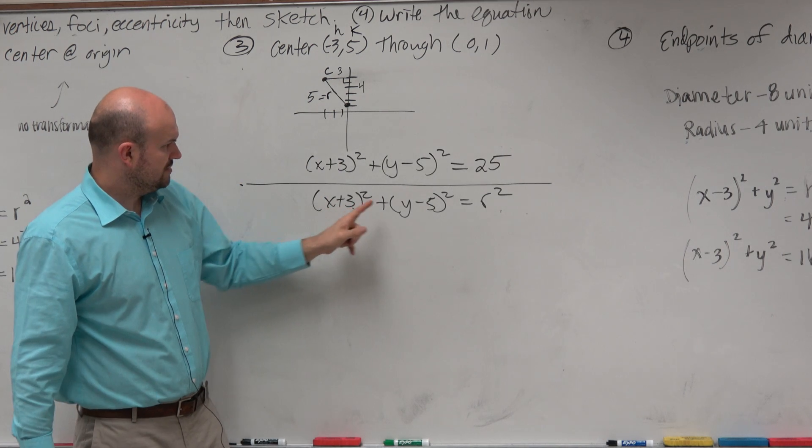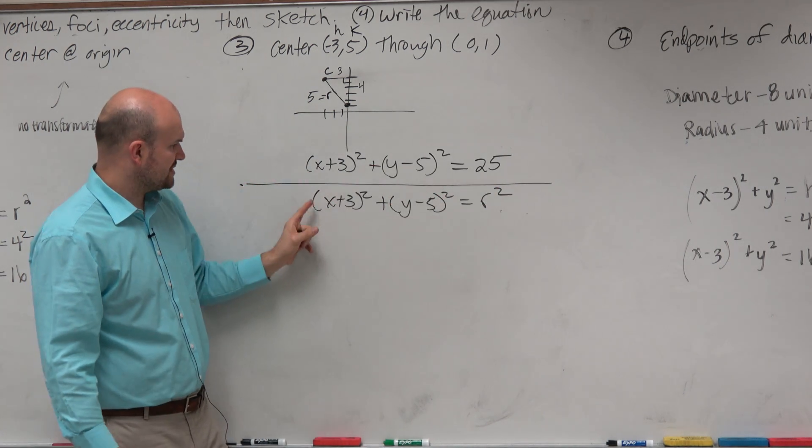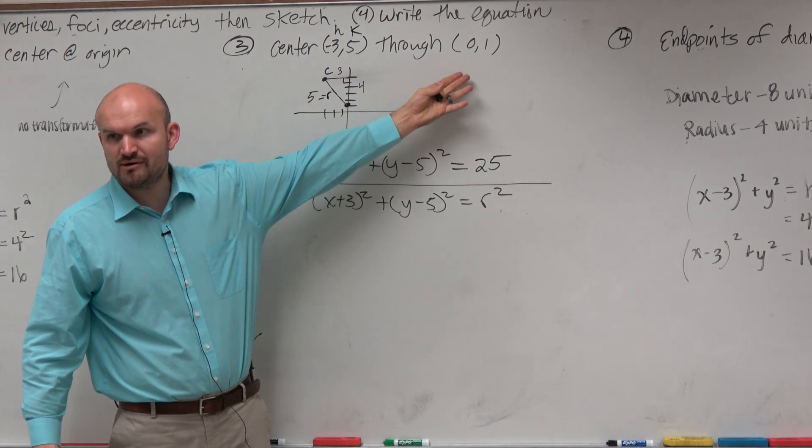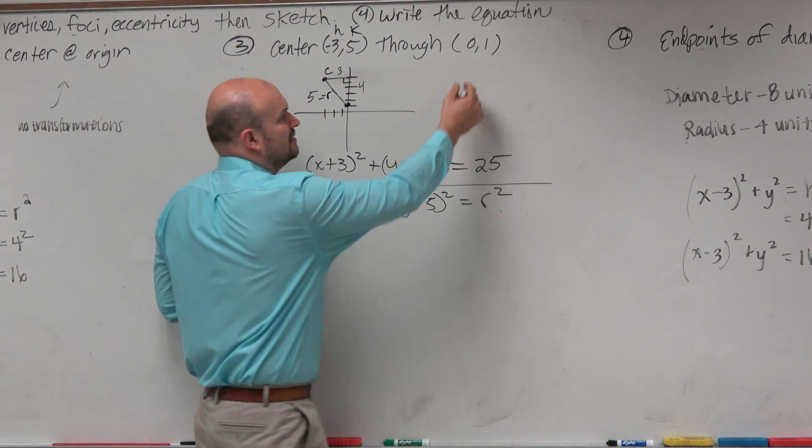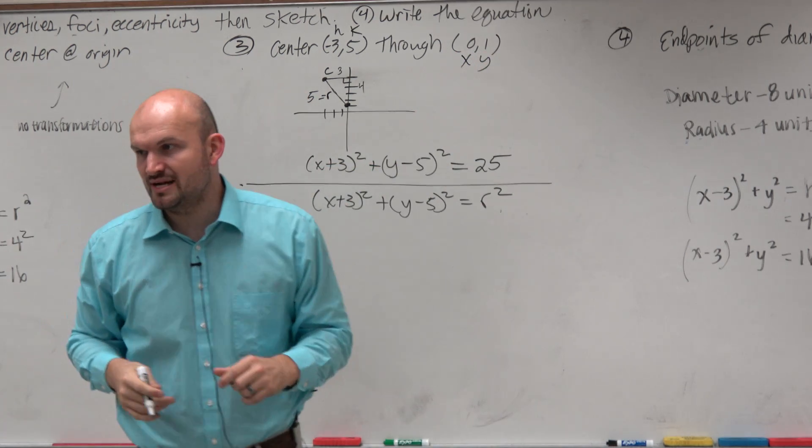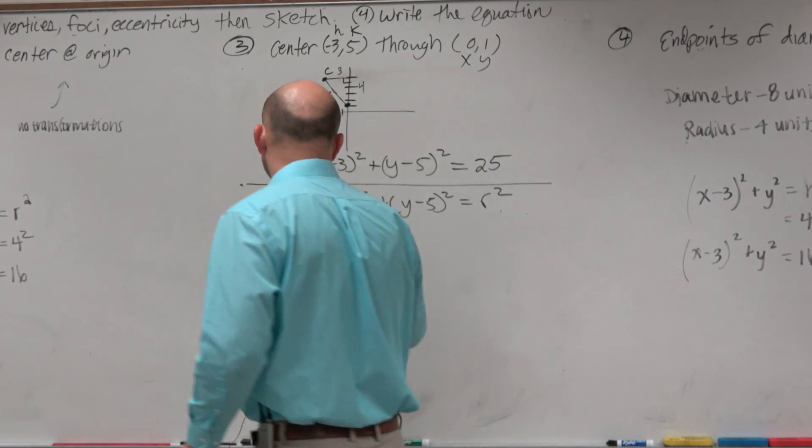What would (0, 1) represent? We still have three variables. We have three variables here: x, y, and r. What do you think (0, 1) represents? x and y. So is there anything wrong with us plugging those points in for x and y and solving for r? No. Let's do it.